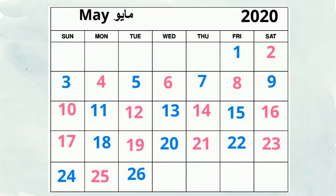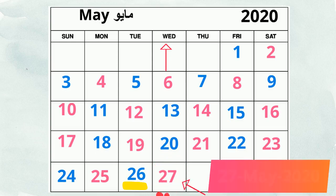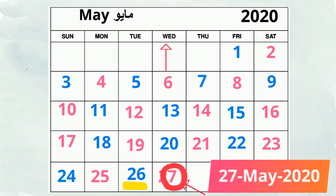But what about the date of today? Today is Wednesday. Yesterday was Tuesday and it was the 26th of May 2020. What comes after 26? Great — 27. Today is the 27th of May 2020.